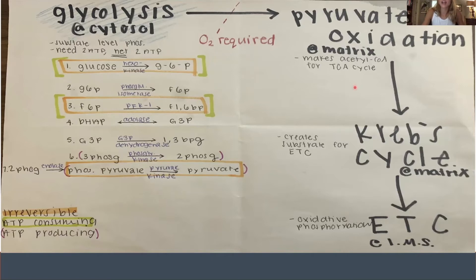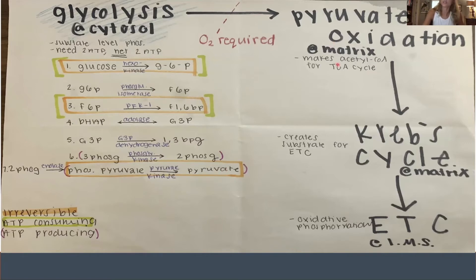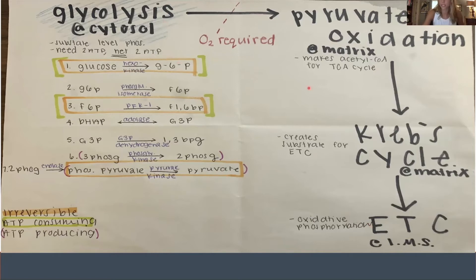Every product of each step is the reactant of the following step. For example, glycolysis produces pyruvate — two of them. In pyruvate oxidation, the product is acetyl-CoA, which goes into the Krebs cycle. The Krebs cycle creates highly energetic molecules, which go into the electron transport chain, which creates ATP — required for the first step. So it's just a big cycle.